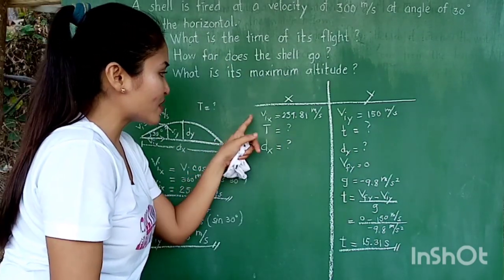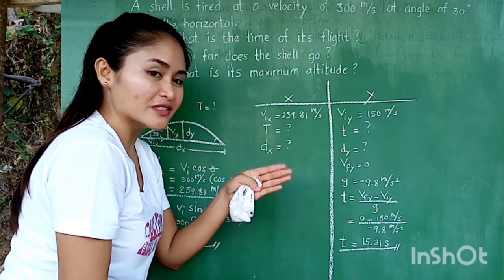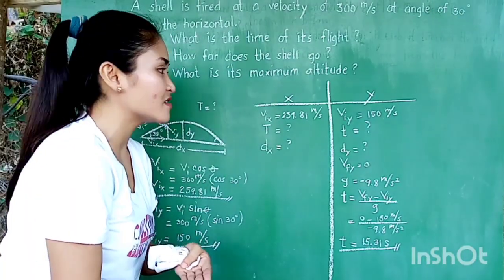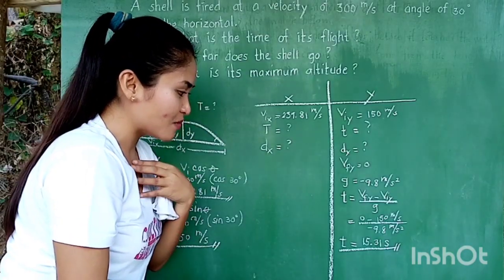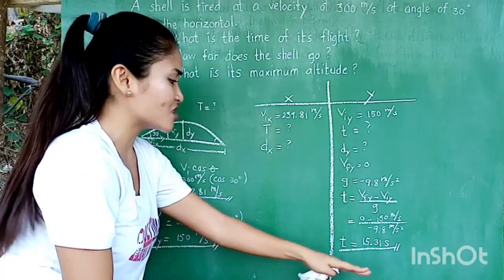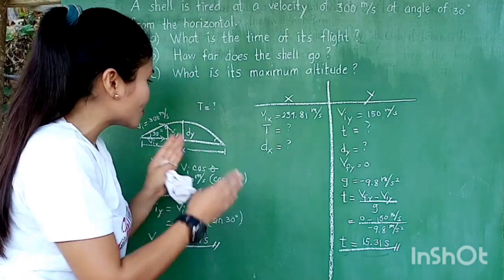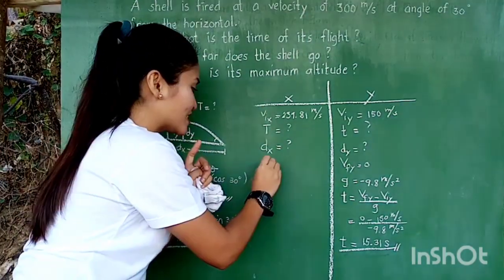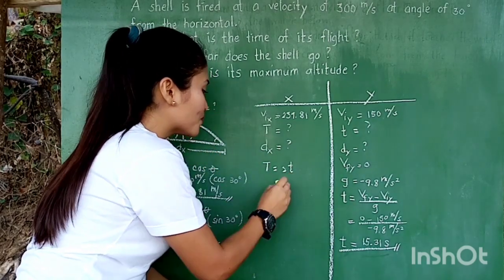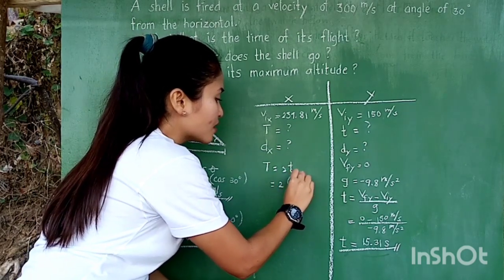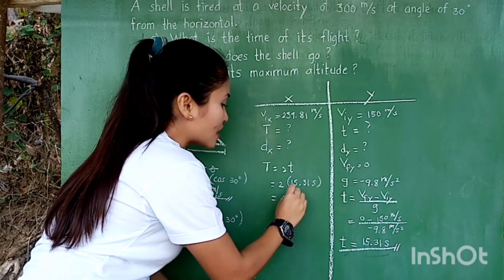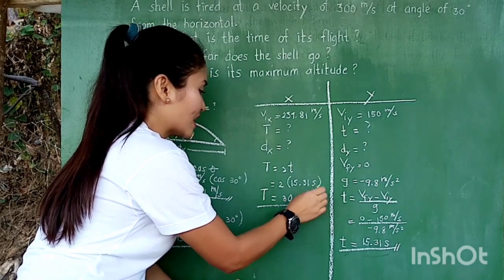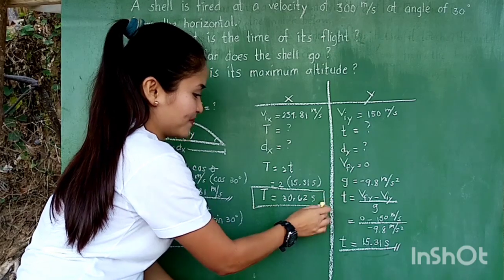Note that the VIX and t have been rounded off to two decimal places. It's actually not advisable to round off answers especially if they are not yet the final ones, because they will affect the accuracy of your final answer. I just rounded it off for convenience. We already have the value of t, half of the time going up or going down. Since the total time T equals 2 times t, then 2 times 15.31 seconds gives us 30.62 seconds. This is now our total time of flight, which is the answer to letter A.